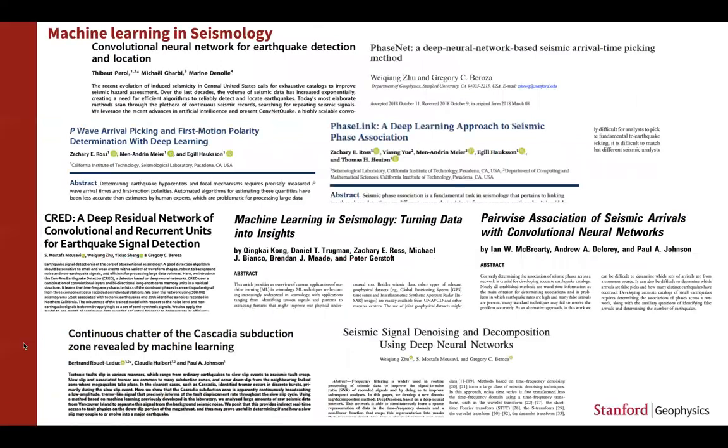Over the past few years, there's been a sharp increase in the number of machine learning applications in earthquake seismology. Most of these works show impressive performance compared with standard algorithms, but what was the main reason behind their success?